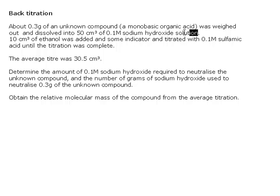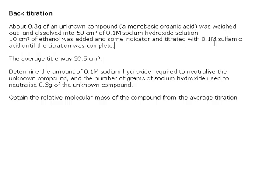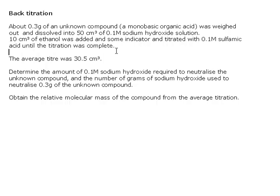10 cm³ of ethanol was added and some indicator, and then titrated with 0.1 M sulfamic acid until the titration was complete. So the sulfamic acid is then being used to neutralize the excess sodium hydroxide, and the average titer of sulfamic acid is 30.5 cm³.